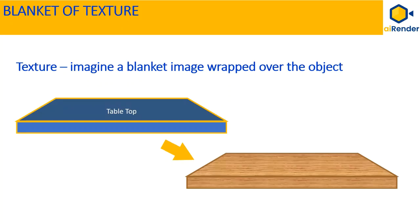Instead, let's consider a texture map. Think of a texture map as a blanket wrapped over the 3D object. For example, consider the tabletop shown below. We can wrap it with a texture map of plywood texture as shown here.